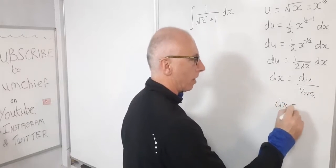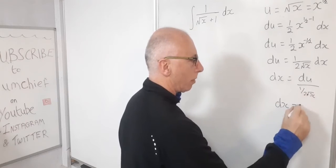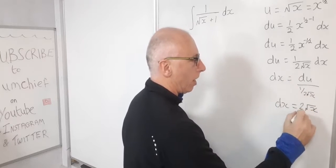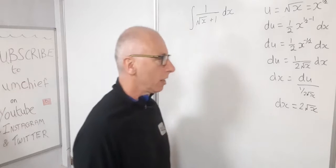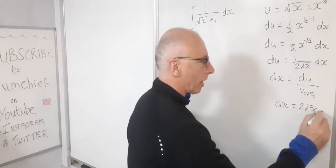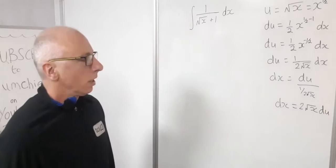So now dx, so two root x can go on top. And then our denominator will now disappear. And then now du will stay next to it.